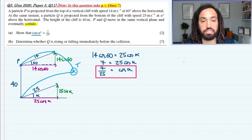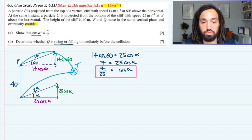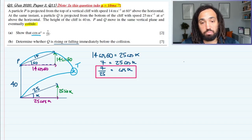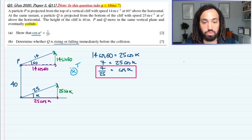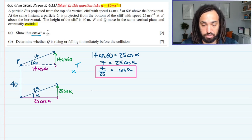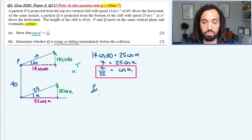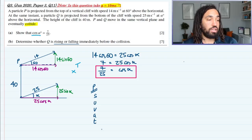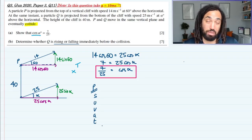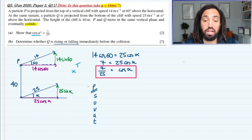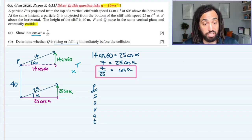Now it says determine whether Q is rising or falling immediately before the collision. Well, another clue in the question there—rising or falling means that I'm going to be looking at the vertical. So for SUVAT questions, what I like to do is write SUVAT for each object in the horizontal and vertical normally, but because we're only looking at the vertical, let's just focus only on the vertical and fill in as much information as I know.